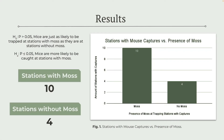The null hypothesis was that mice are just as likely to be trapped at stations with moss as they are at stations without moss. The alternative hypothesis, which I hoped my data would support, was that mice are more likely to be caught at stations with moss. Figure 1 shows that we did have more mouse captures at stations where moss was present. However, in order to determine the probability that these results would occur and to test for statistical significance, I ran a chi-square test.